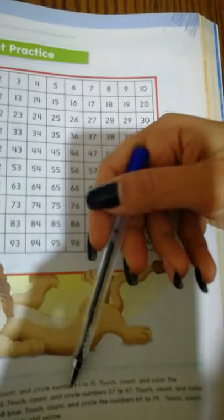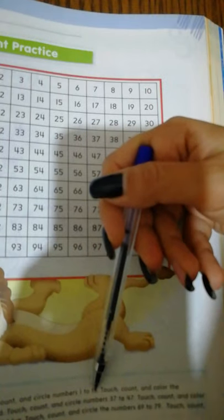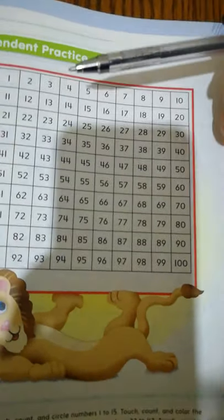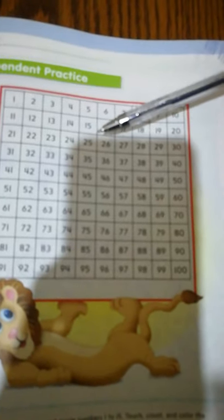Touch, count, and circle numbers 1 to 15. So using a pencil, you circle numbers from 1 to 15. You find the numbers from 1 to 15 and you circle them.